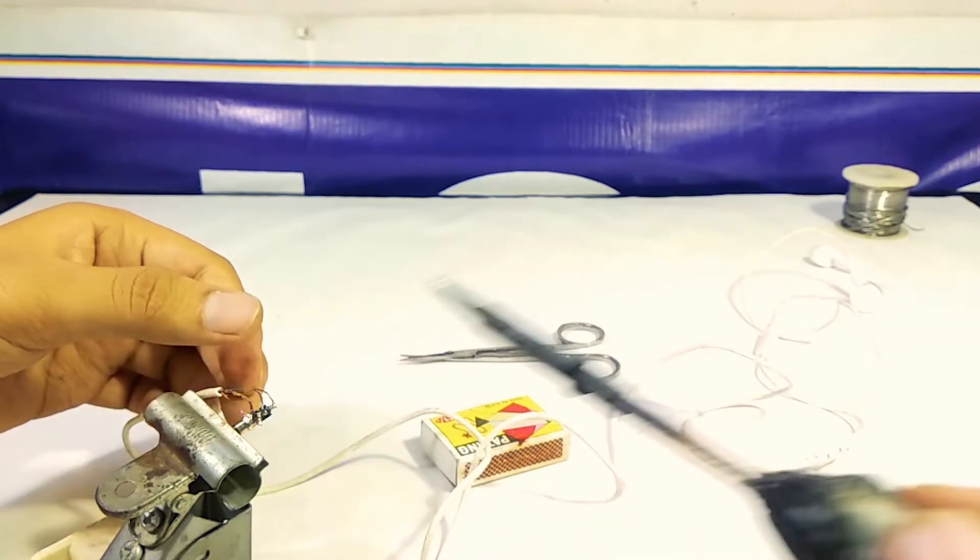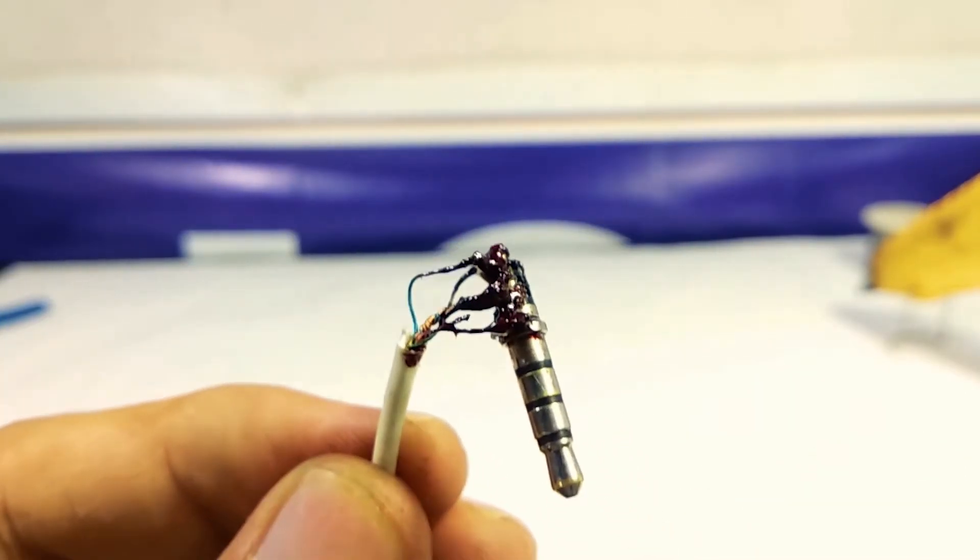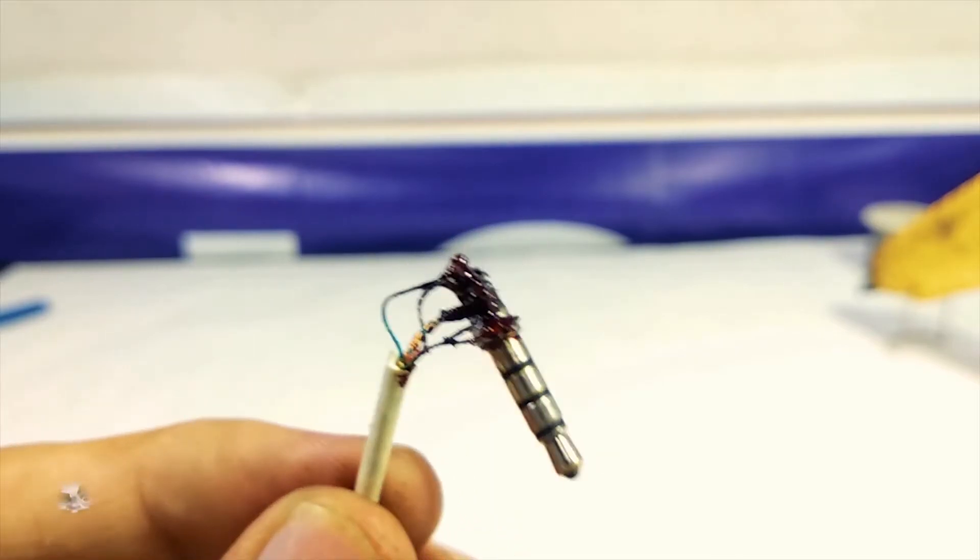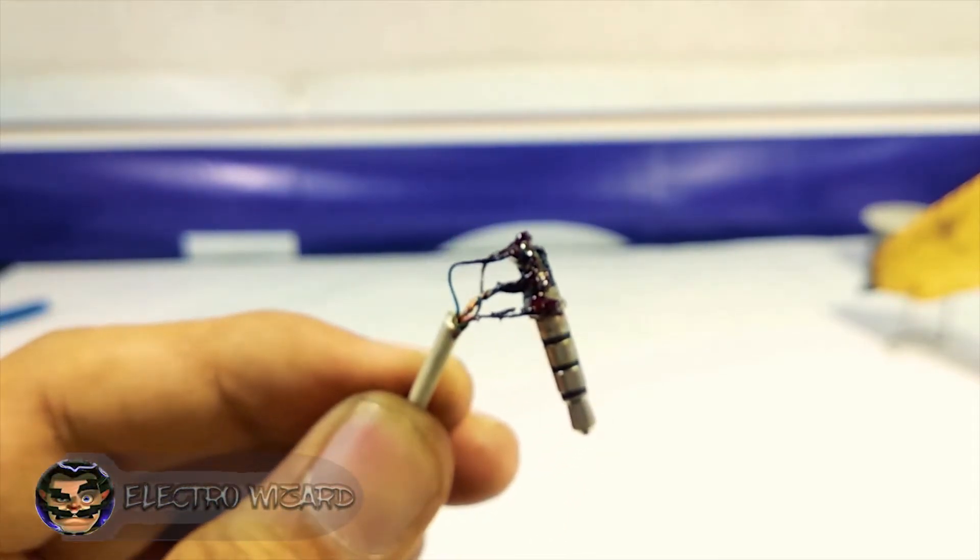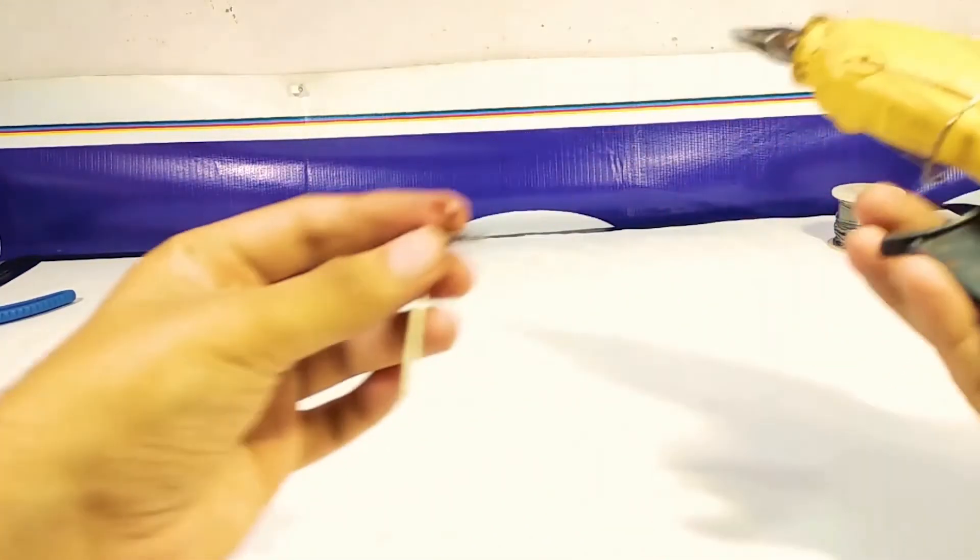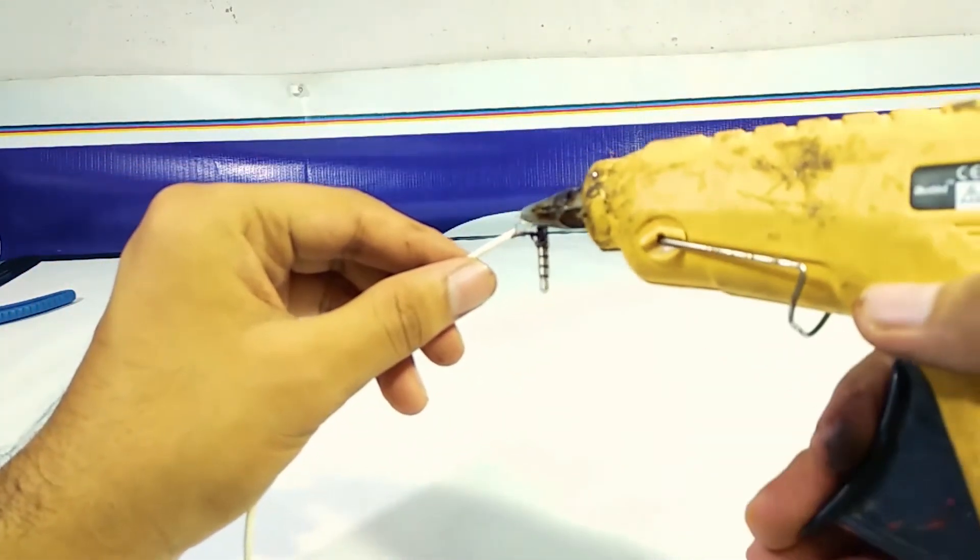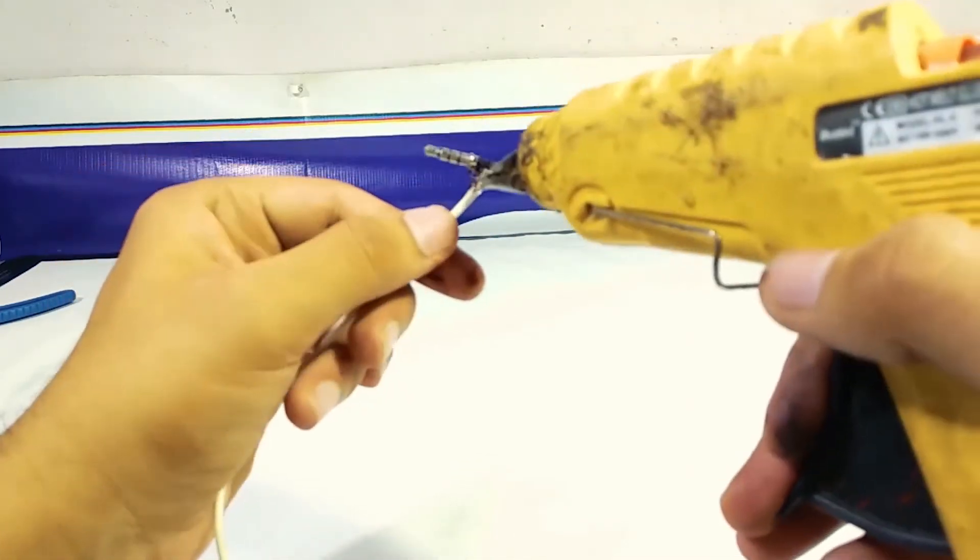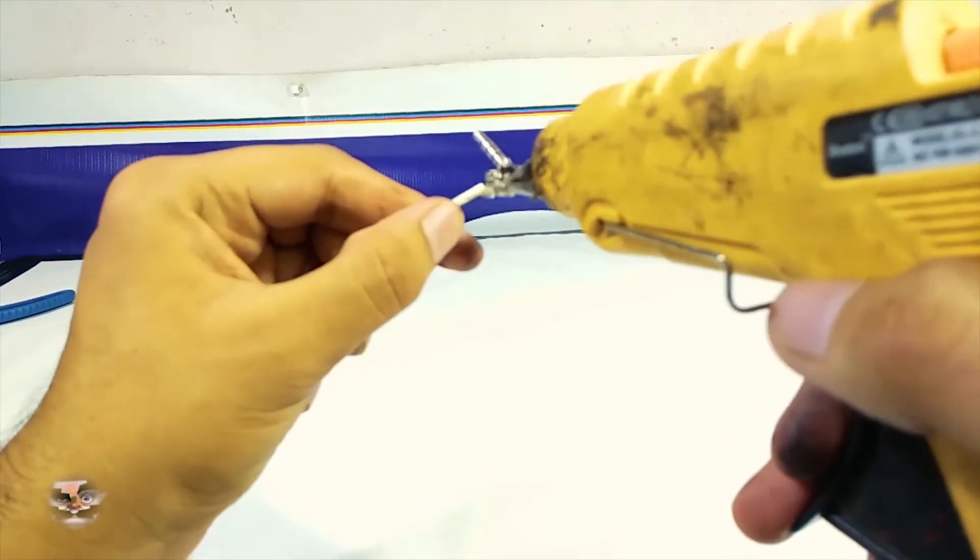After soldering all four points, I've applied a layer of enamel. You can use any nail polish, acrylic color, or anything else which has insulating property. After that, I've applied glue from a glue gun and secured the 3.5 jack with a heat shrinking sleeve.